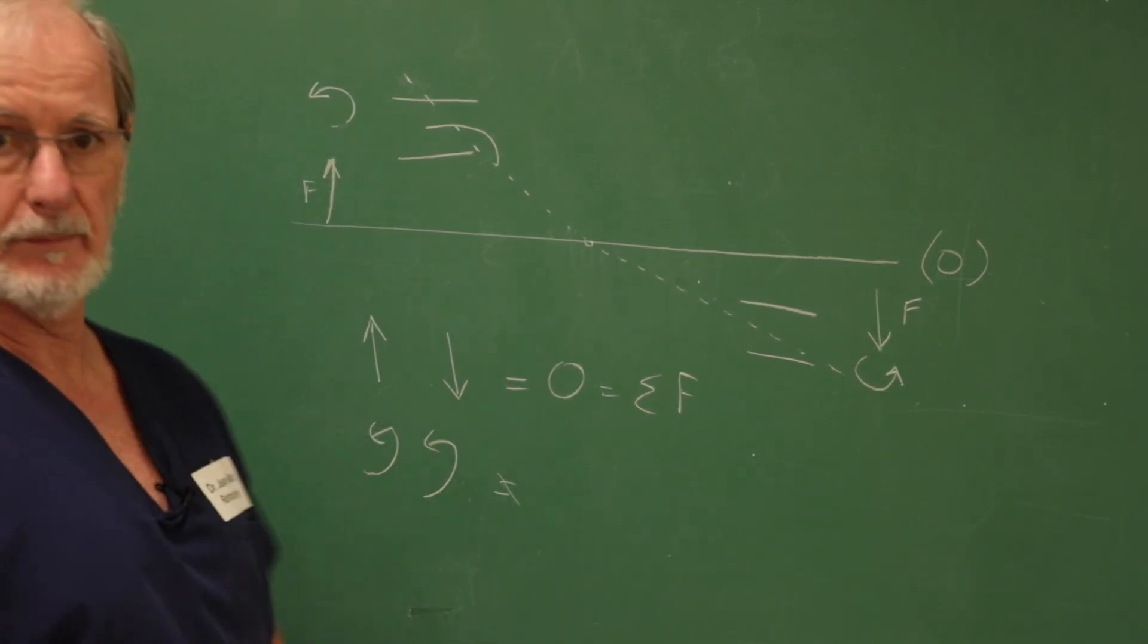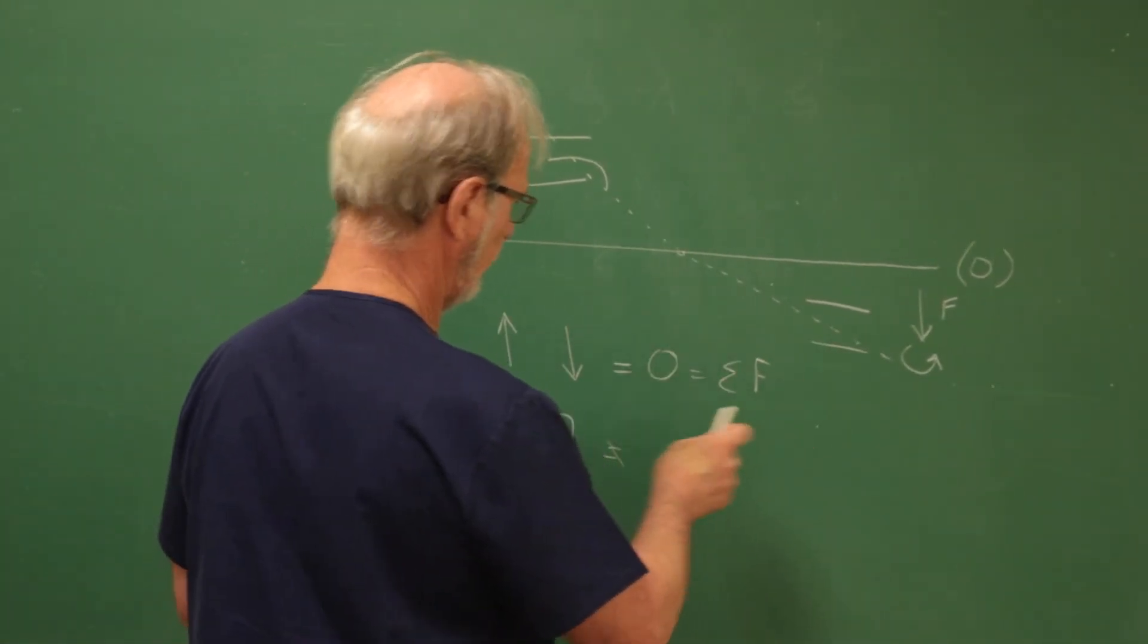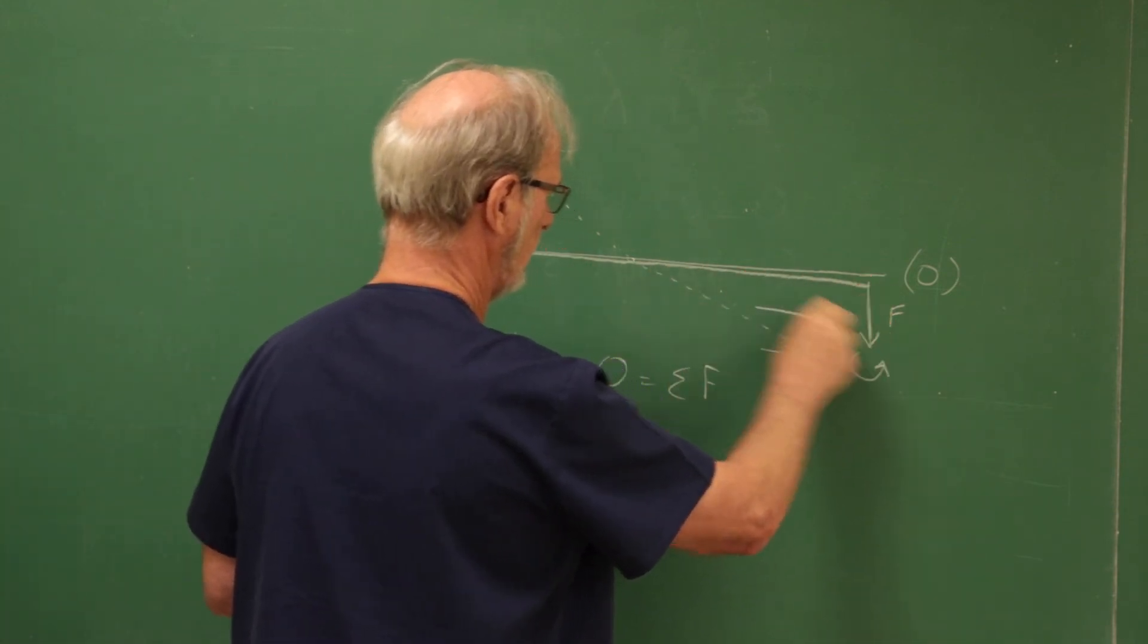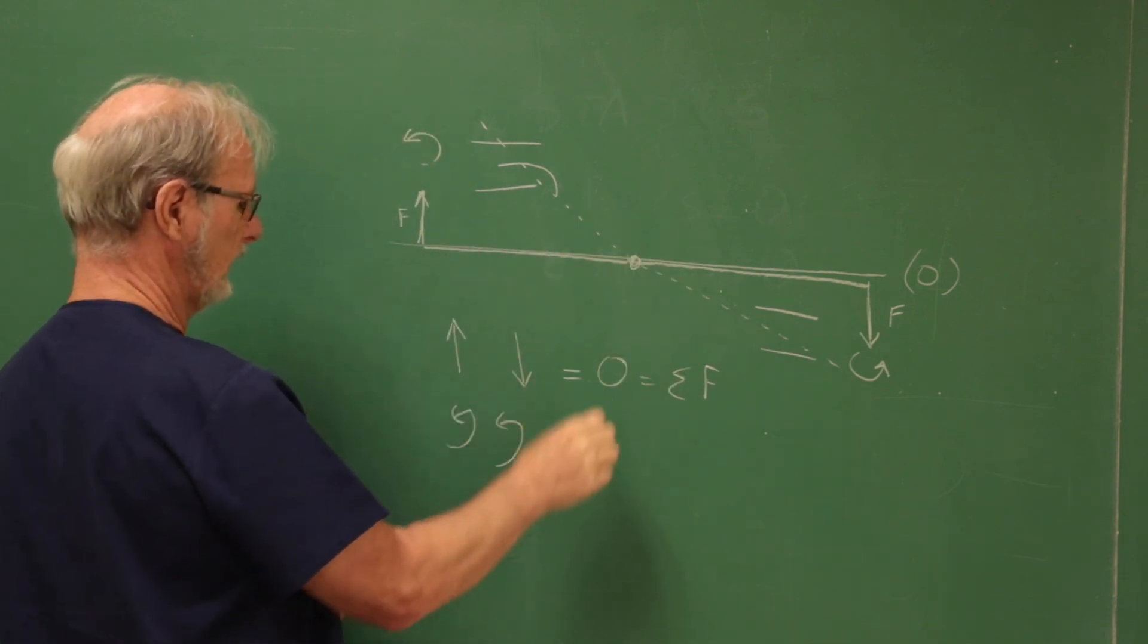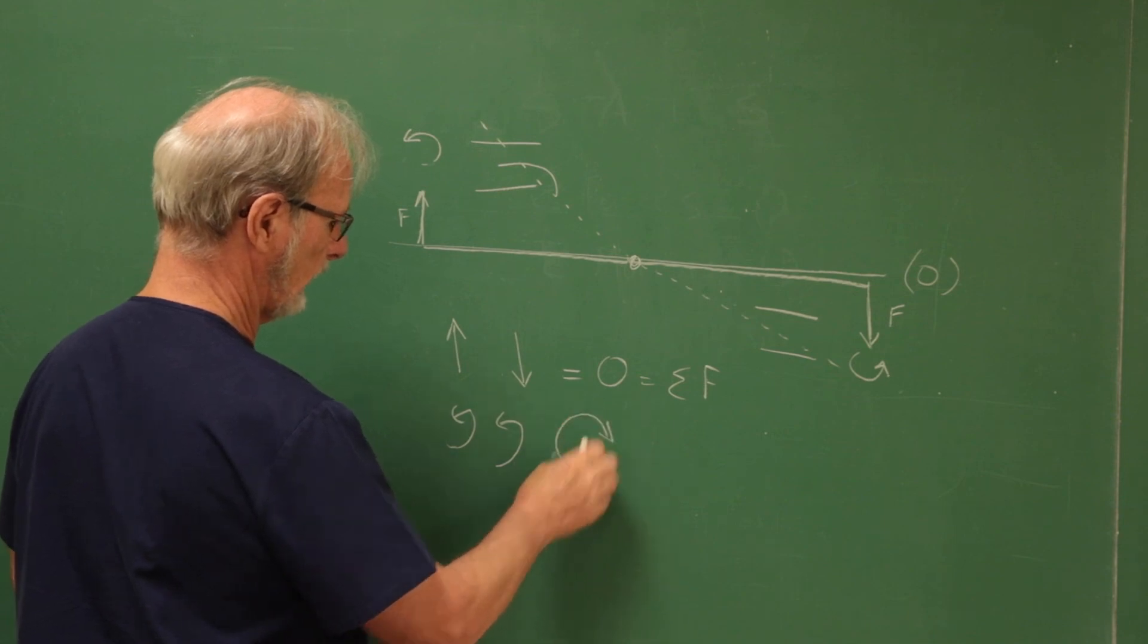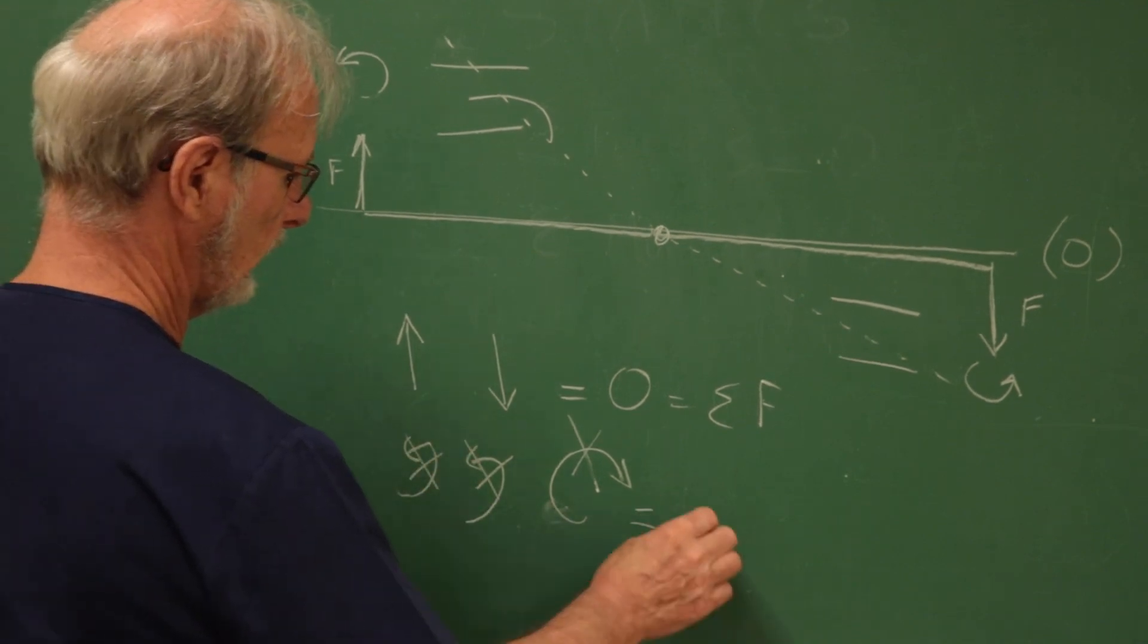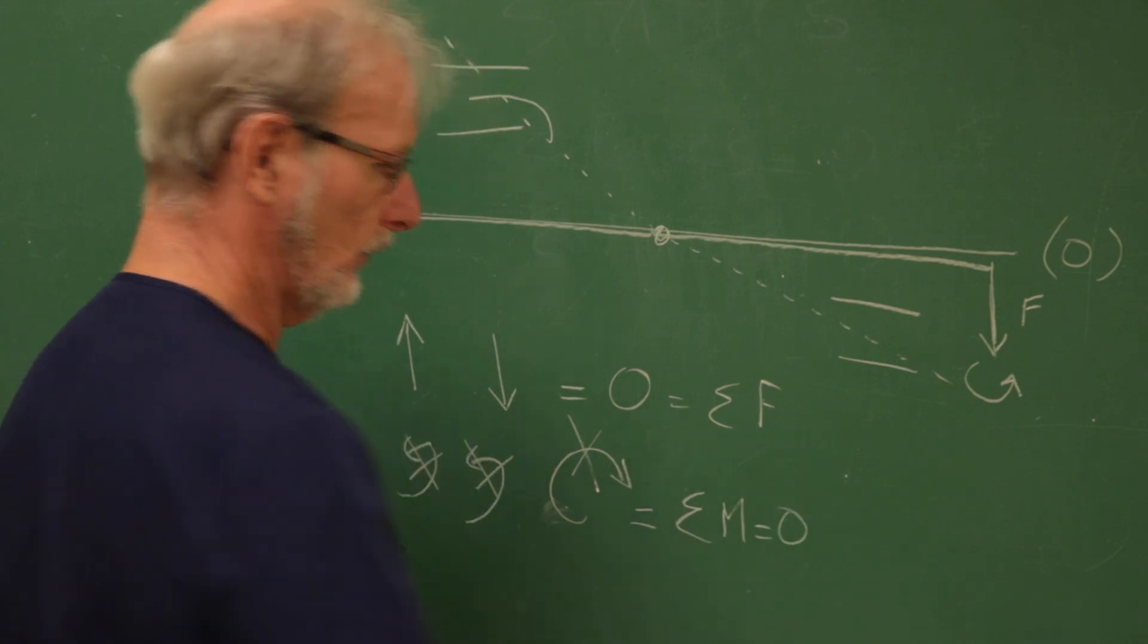So how come it's not working? Because if you look carefully at the system, this force here times this distance right there also creates a couple, which actually is in this direction. So now you have a larger moment in this direction, and this moment and these two moments are equal and opposite, and the sum of moments equal zero again.